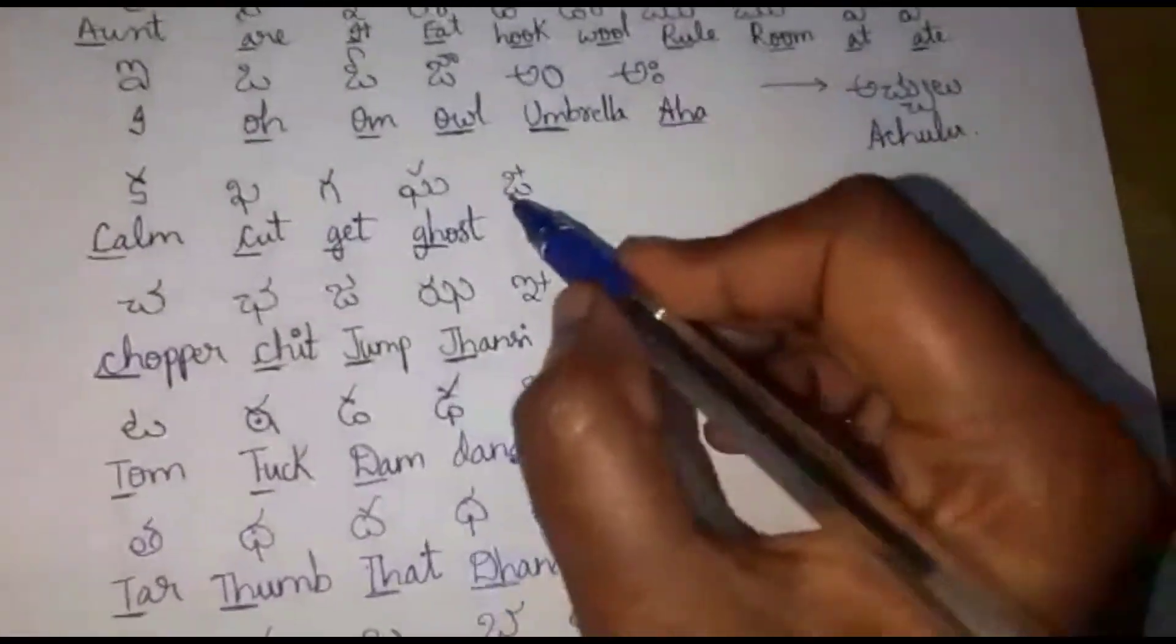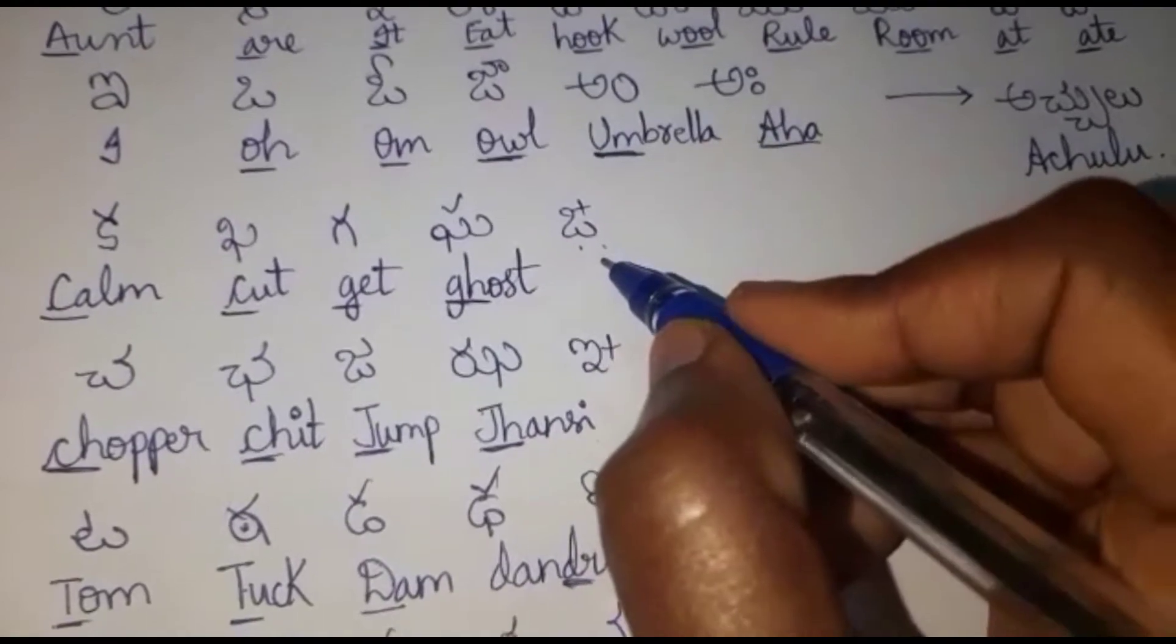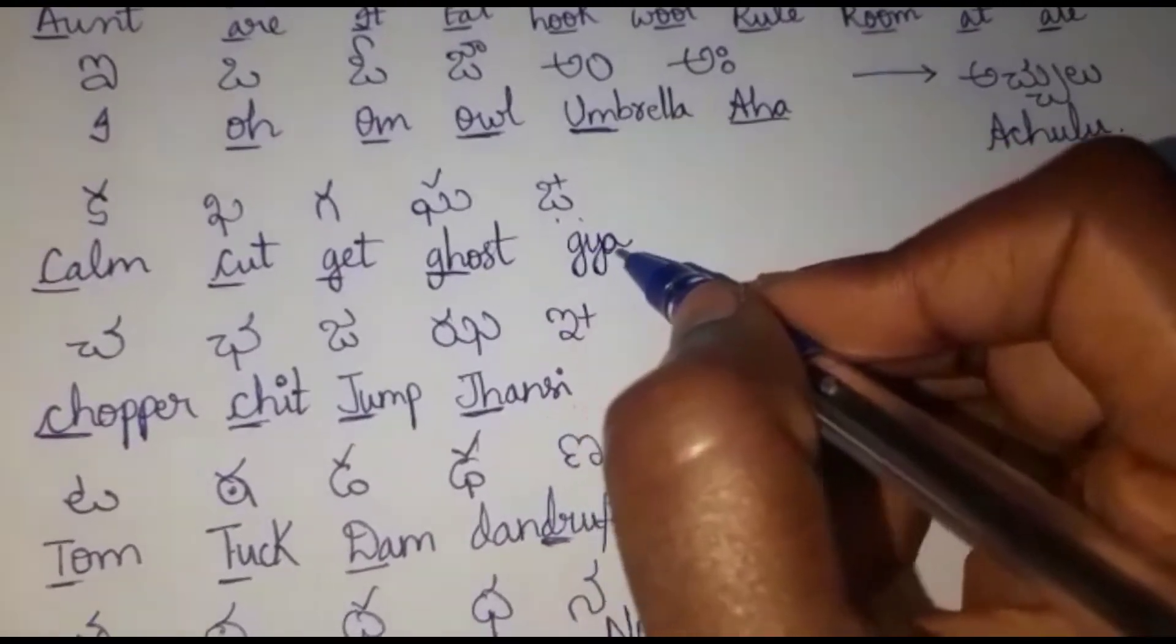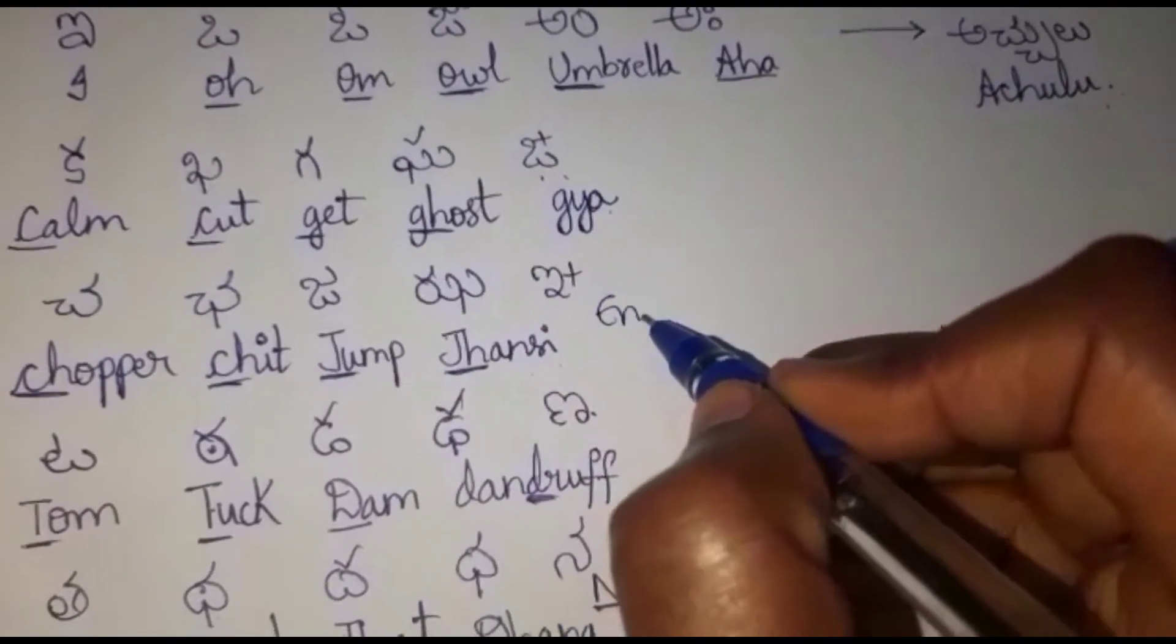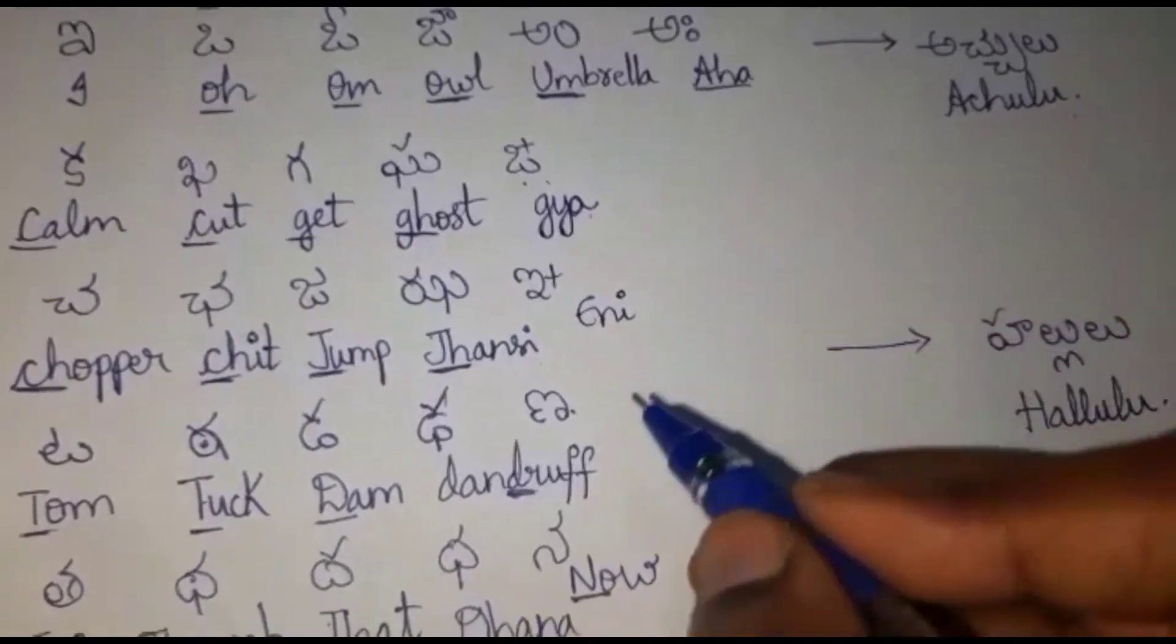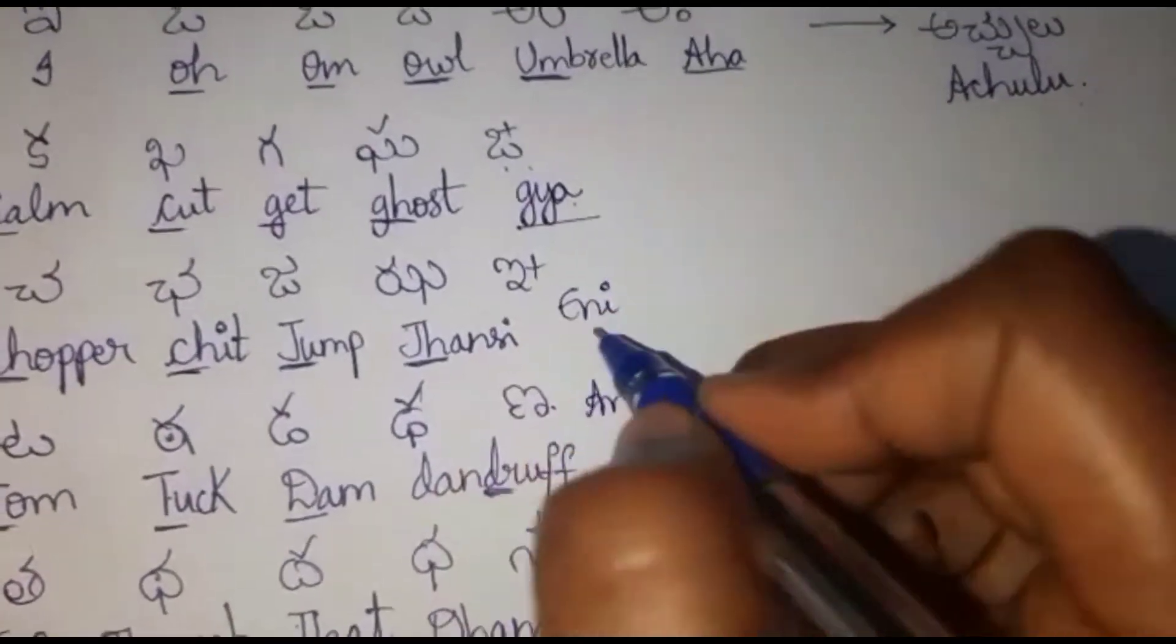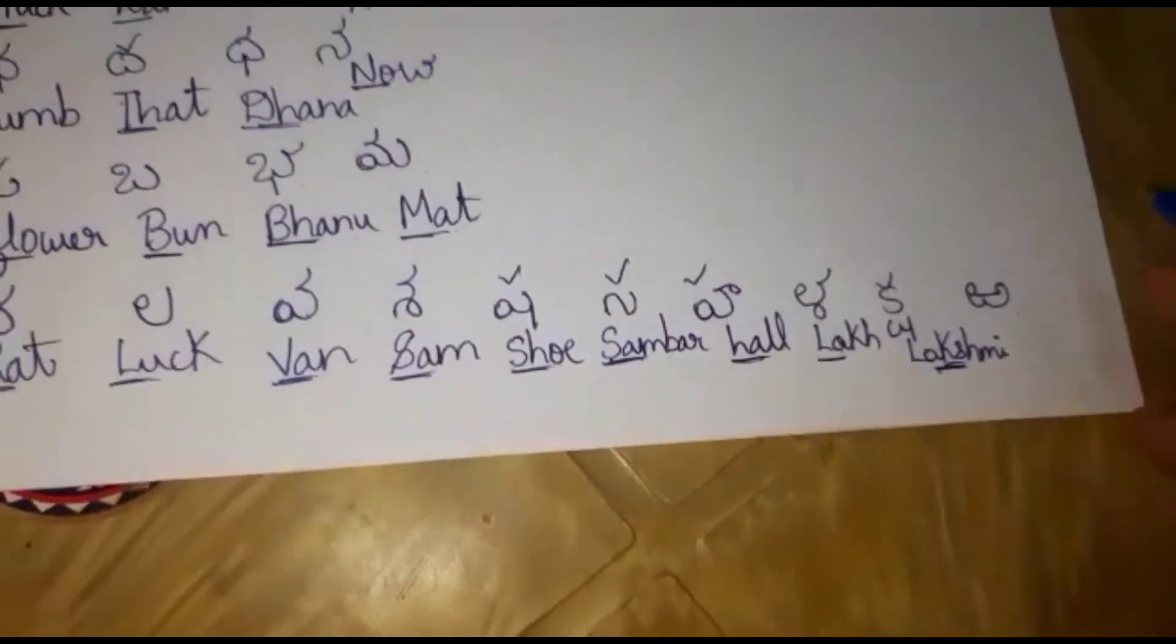Now, I will tell you the pronunciation of these letters which I left now. This is called Gnaa. This is called Ini. This is called Ana. Pronunciation of these words Bandira.